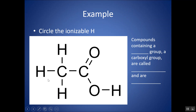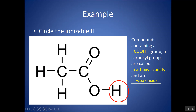For an acid, circle the ionizable H — not the H connected to C. This H is connected to the O, which is electronegative, so it hoards the electrons, allowing the H to break off as just H+. The COOH group is a carboxyl group; compounds with a carboxyl group are called carboxylic acids, and these are typically weak acids.